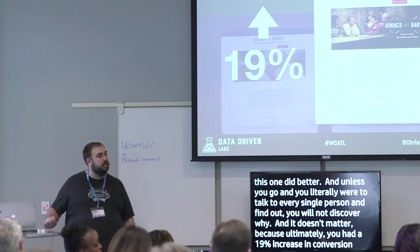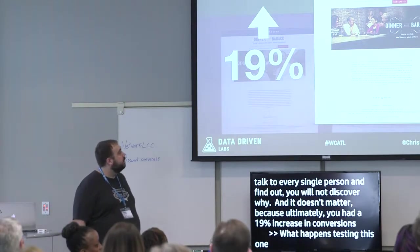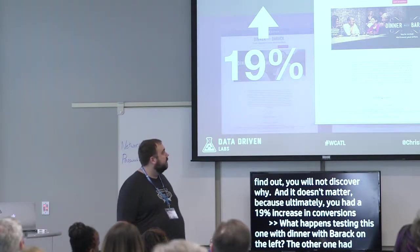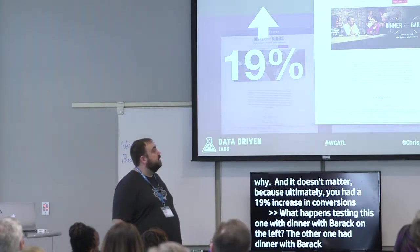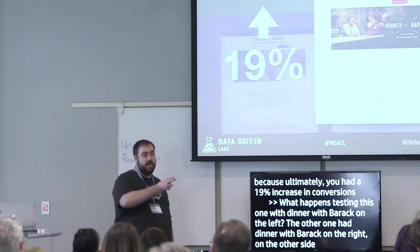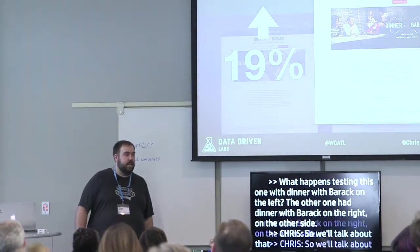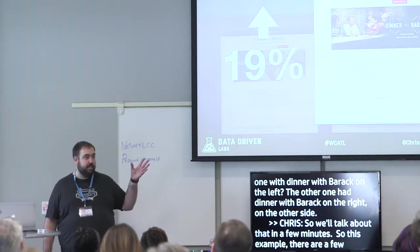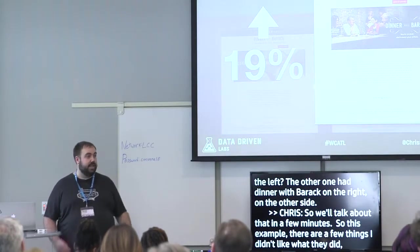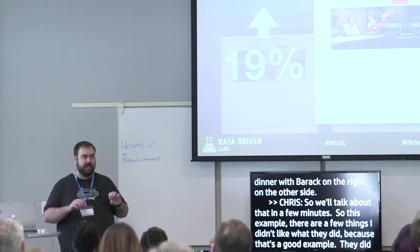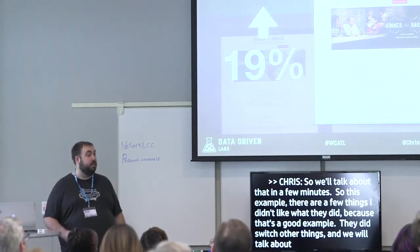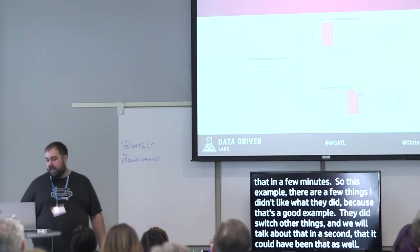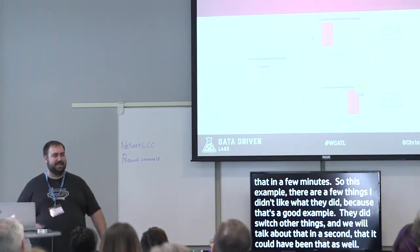A question was raised about whether the position of the text changed as well as the image in the Obama test. That's actually a good example of what not to do — they did switch other things besides the image. We don't know if the text switch is what may have caused the change. That's under our 'don't screw up' section: change one element at a time.